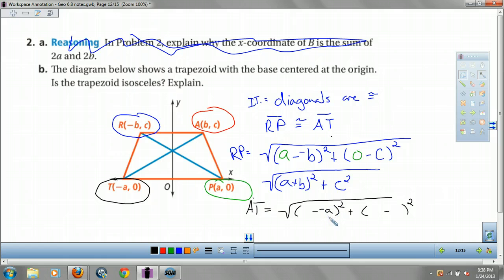Negative a, I'm going to plug in my zero, and I'm going to plug in my points for a. I'm going to put b and a c. And I'm going to get square root of b plus a squared plus c squared. So is RP equal to AT? Yes, because a plus b squared is the same as b plus a squared.